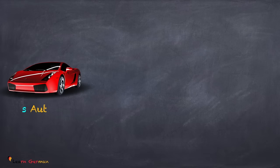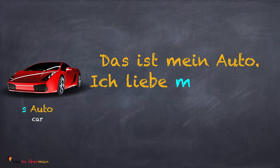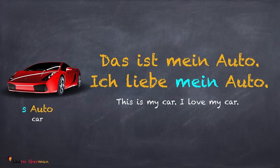Let's see what happens when the accusative object has the article 'das'. Das ist mein Auto. Ich liebe mein Auto. Since the article of 'Auto' is 'das', the possessive pronoun remains mein.